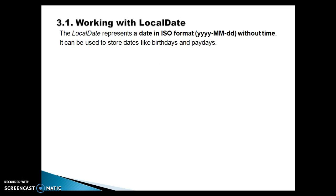As part of this video we will cover the most commonly used APIs. First of all, we will look into the use cases of LocalDate. LocalDate represents a date in ISO format — basically in yyyy-MM-dd format — without time. It can be used to store things like a birthday or paydays.